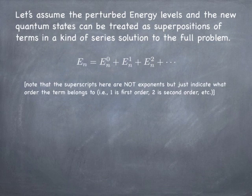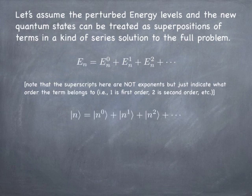The superscripts here are not exponents. So E0 is not E to the power 0 — it's just the zeroth order, or the original energy of the unperturbed Hamiltonian. And E1 is a first order correction — something linear in the perturbation. So the solution to the perturbed Hamiltonian is the original state plus a little added bit, that's the first order correction, and then an even tinier bit, that's the second order correction, and so on.